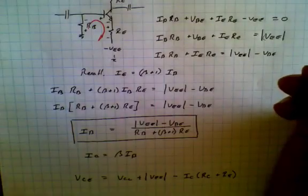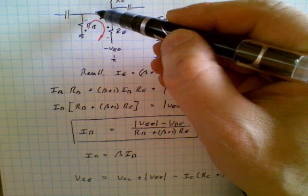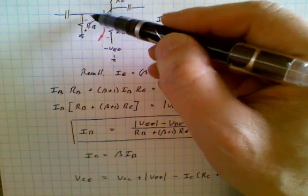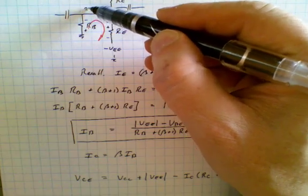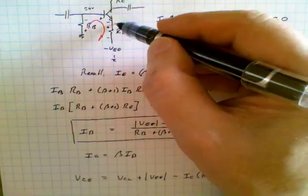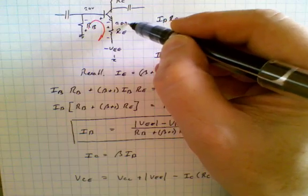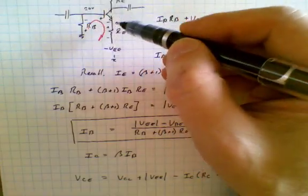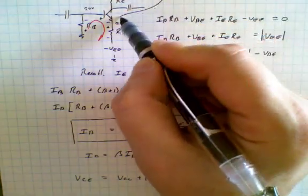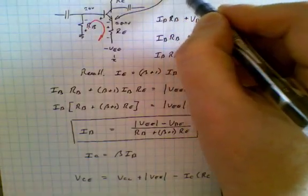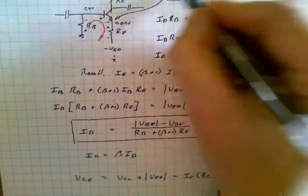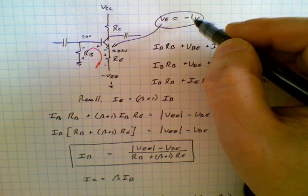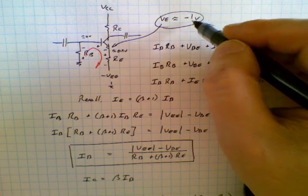We should notice that the voltage at the base is going to be very close to zero — in fact it would be zero if there were no base current, but assuming some base current flows, the base is approximately zero volts, which means the base-emitter voltage is approximately 0.7 volts. A good rule of thumb is that the emitter voltage is approximately minus 1 volt. If that voltage is close to minus 1 volt the circuit is likely working; if not, it is likely not working properly.